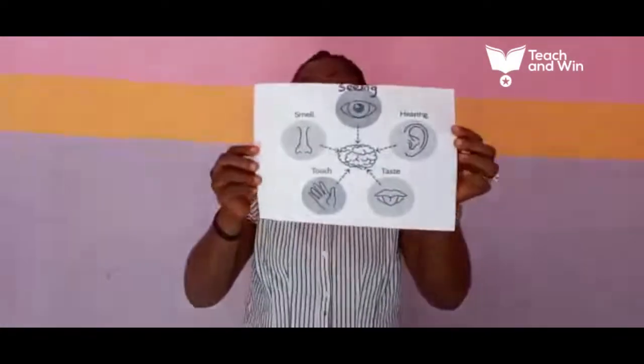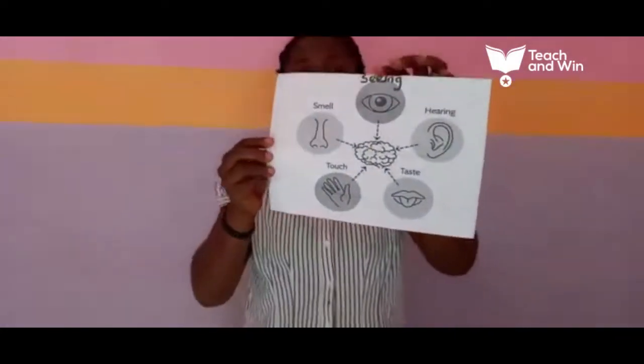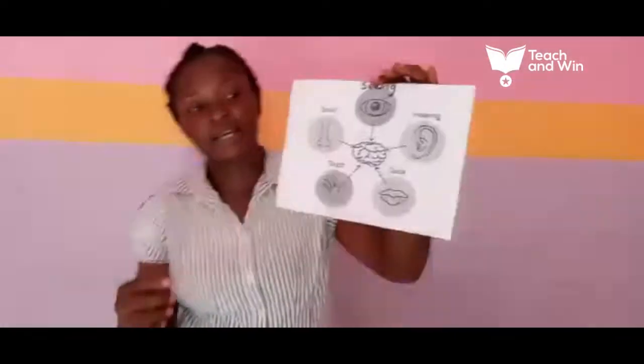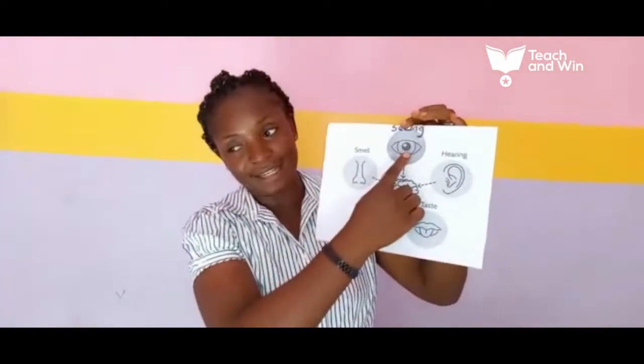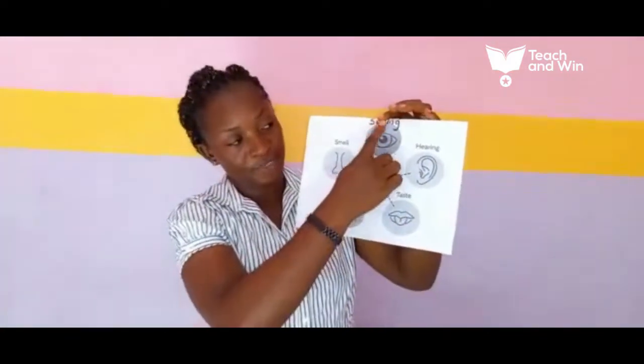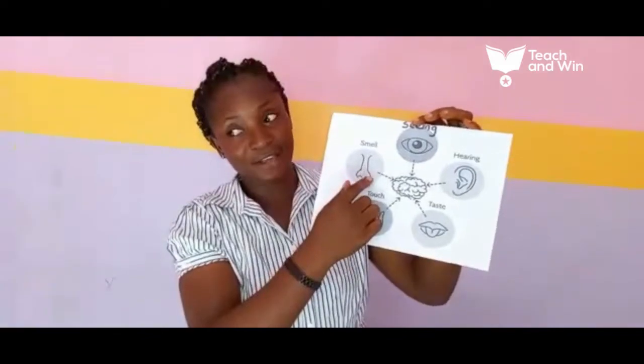So these are sense organs. The eyes — the eyes are used for seeing. The nose — the nose is used for smelling.